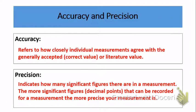First, we're going to look at two important vocabulary words. The first is accuracy. Accuracy refers to how closely individual measurements agree with the generally accepted or correct value, also called the literature value. Your experimental value will be compared to an accepted value that scientists agree on, and how close your experimental value is to that accepted value determines how accurate your results are.